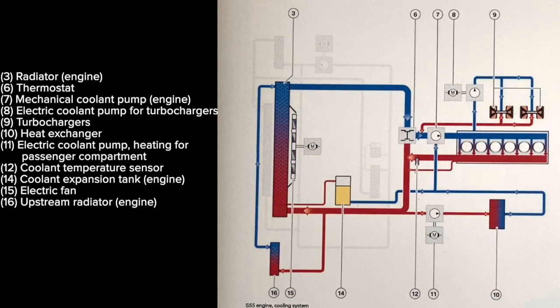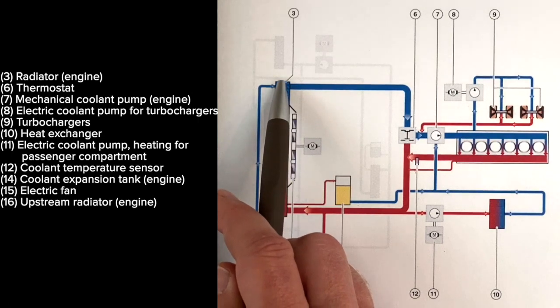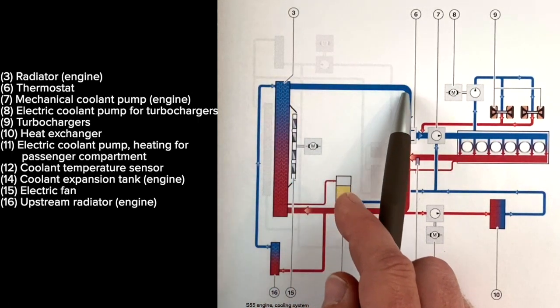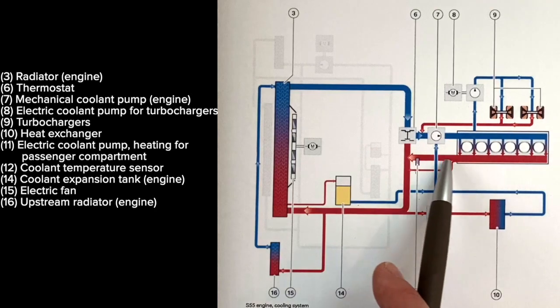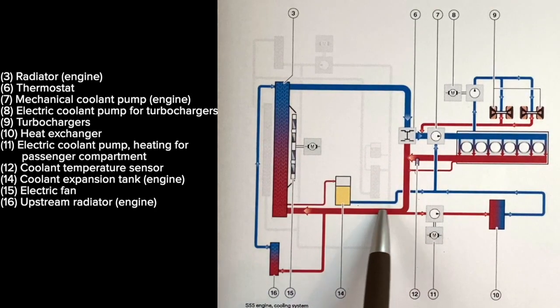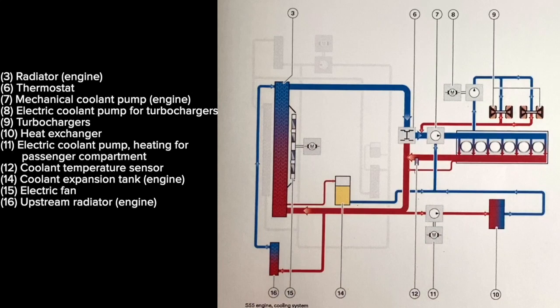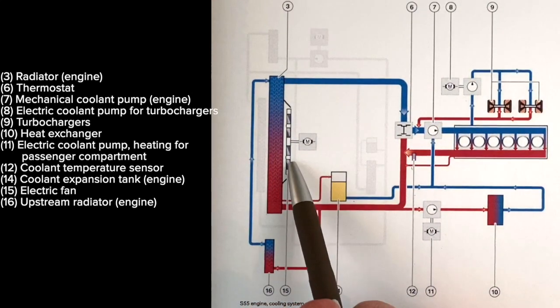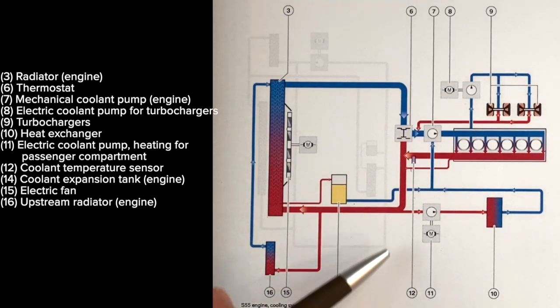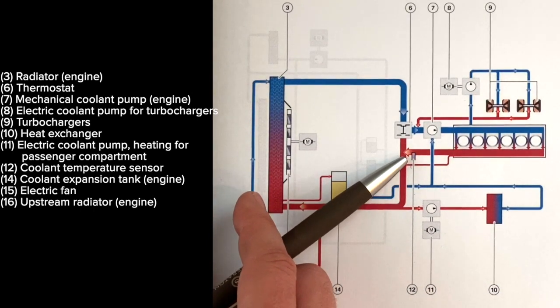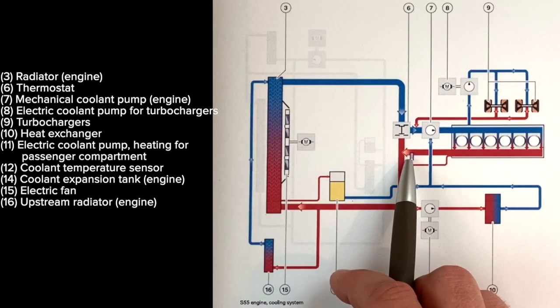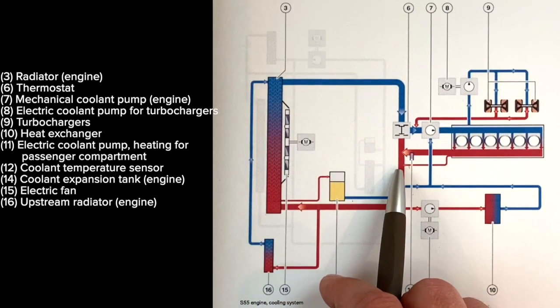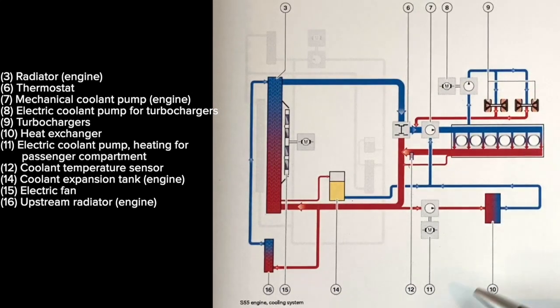Number nine represents your turbochargers. Number eight is a separate electrical pump, and this pump will stay running for some amount of time after you turn the car off to help keep your turbos cool. This diagram is nicely color coded with blue and red showing where the cooled fluids come in, they get pumped through the block and back out. The red gets pushed through your radiators to cool it off once again.